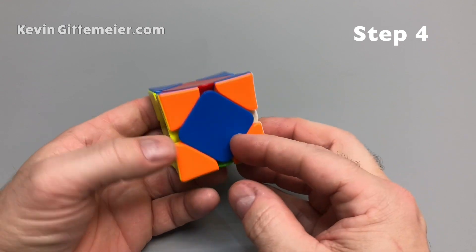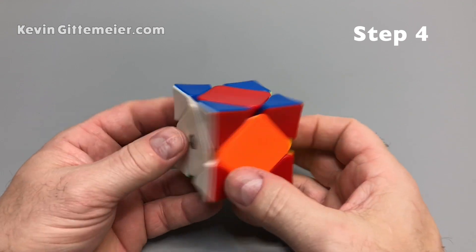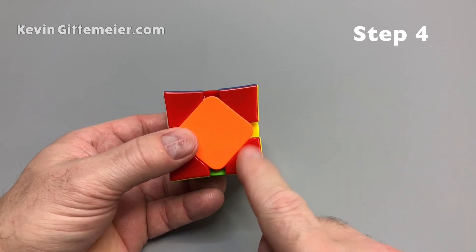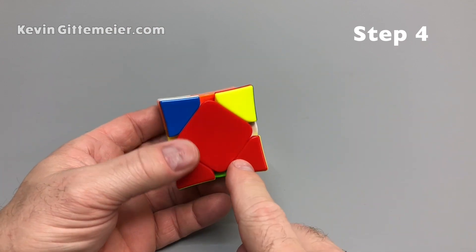And now if we look here, we can use that same trick. Does red need to go down here? No, it does not. So we turn it this way. Does red need to go down here? It does. So we do that sequence.